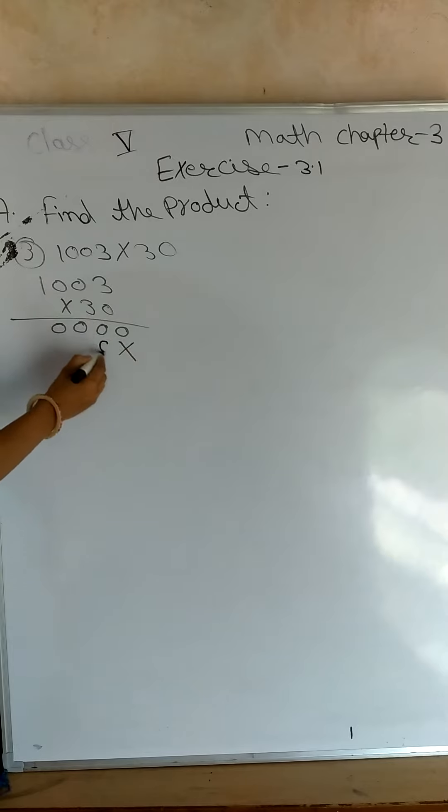3, 3 se kia, 9. 3 ko 0 se kia, 0. 3 ko 0 se kia, 0. 3 banga, 3. Okay, 0 ka 0, 9. Aap ieha pe kya kare, add kare, sum kare.